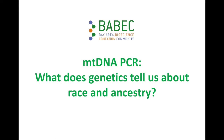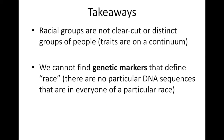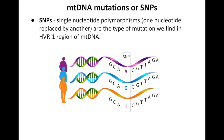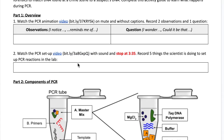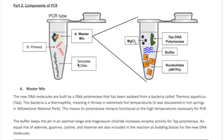In this lesson, students engage with activities that consider the relationship between race, ethnicity, and ancestry. They'll learn about the unique properties of mitochondrial DNA, and explore how PCR helps unlock the genetic information key to understanding our past.